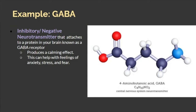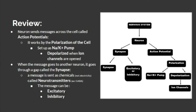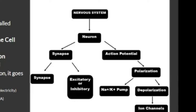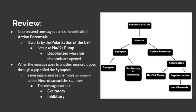To review: neurons send messages across the cell called action potentials, which involve polarization and depolarization. When the message goes to another neuron, it travels through a gap called the synapse and is sent as chemicals called neurotransmitters. The message can be excitatory or inhibitory.